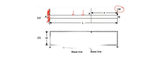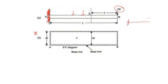What is the effect of this type of loading on a cantilever beam? The first effect is the shear force diagram, which looks something like this. But I am especially interested in the bending moment diagram.